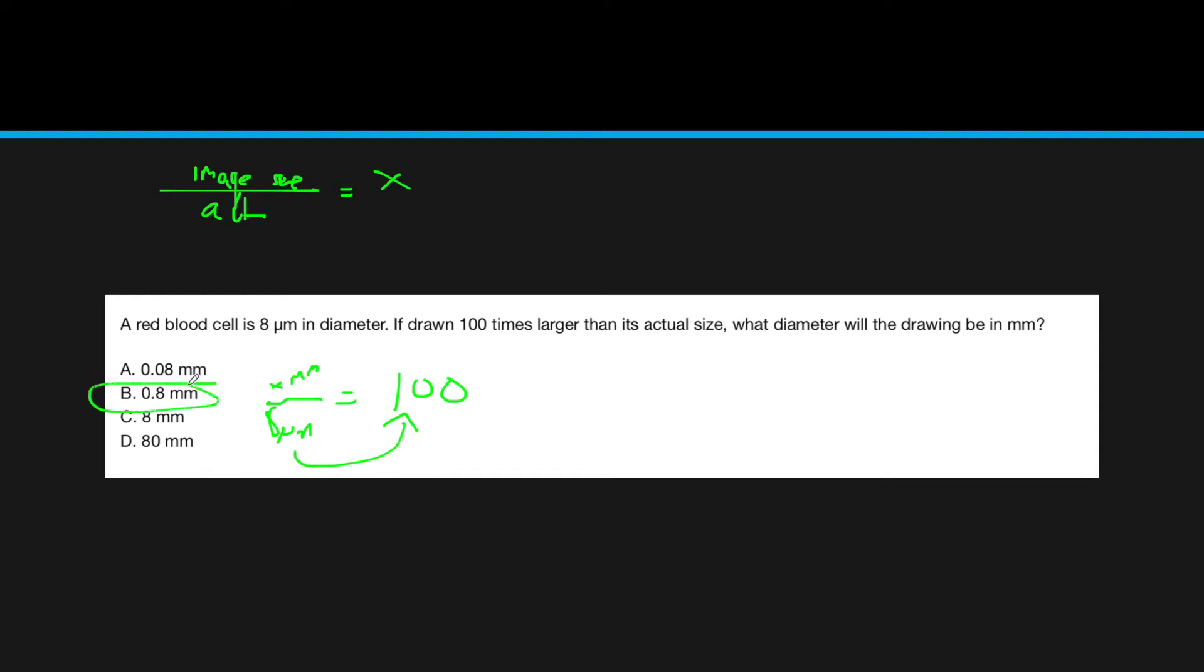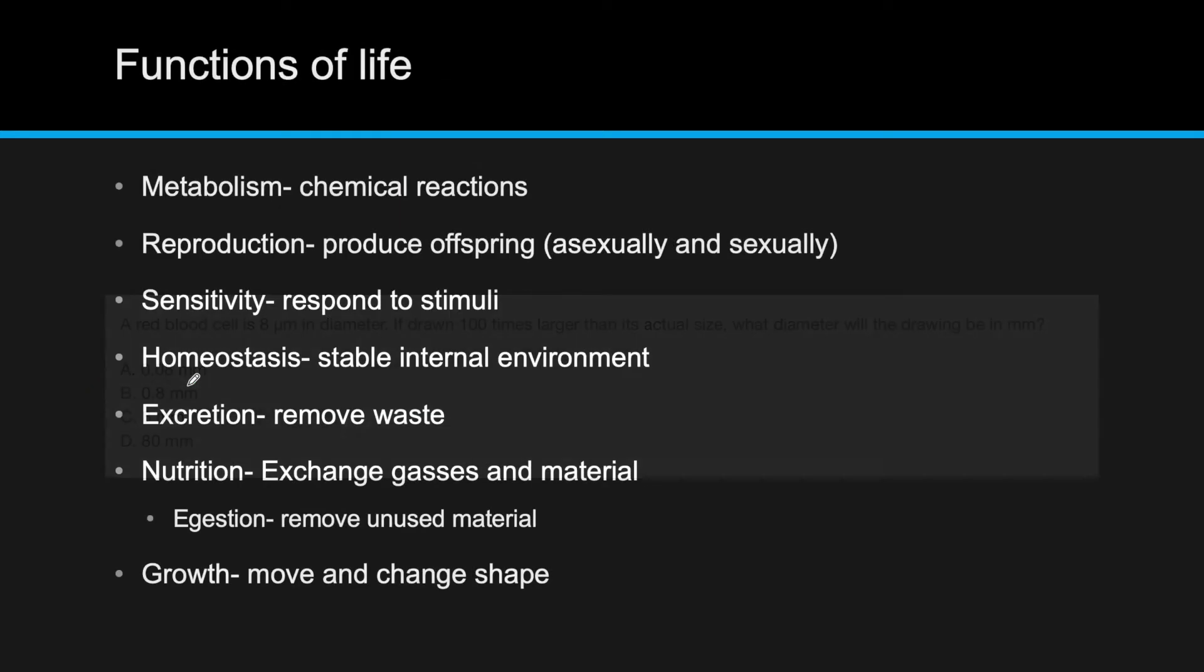Another thing that IB wants you to know is that every cell, unicellular or multicellular, has to undergo the functions of life. While this is not a complete list, it kind of encapsulates most of what cells need to do in order to survive. First we have metabolism, undergoing chemical reactions.